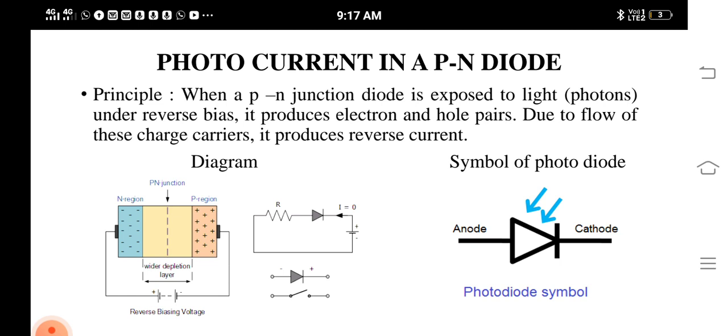The diagram shows two regions, N region and P region, with a PN junction in between. A wider depletion region is formed in the photocurrent PN diode, which is connected with a battery for reverse biasing voltage. The symbol of a photodiode is a diode symbol with inward arrow marks.